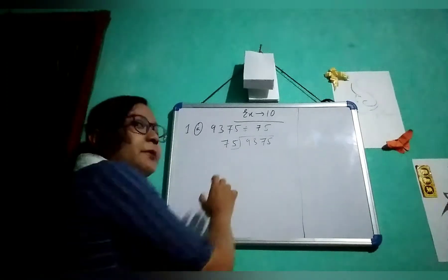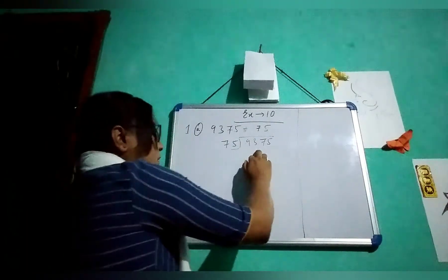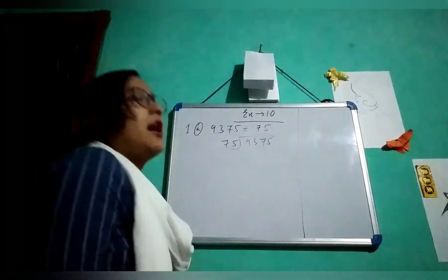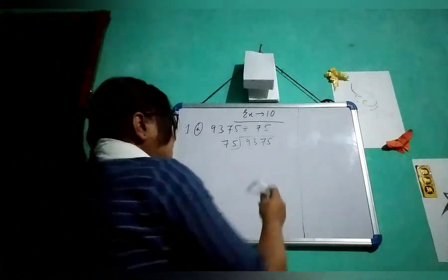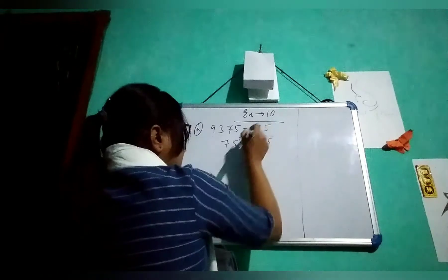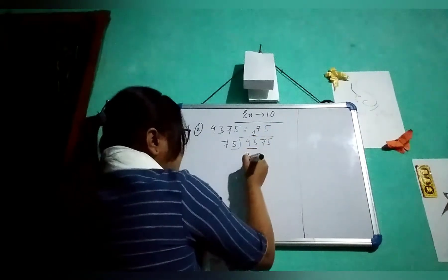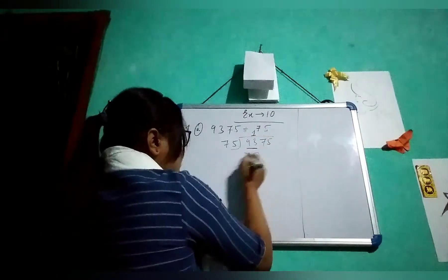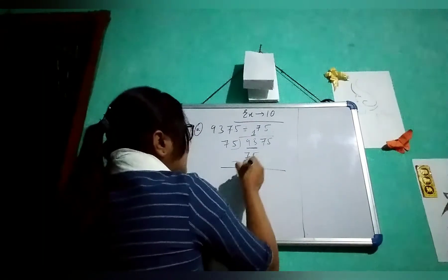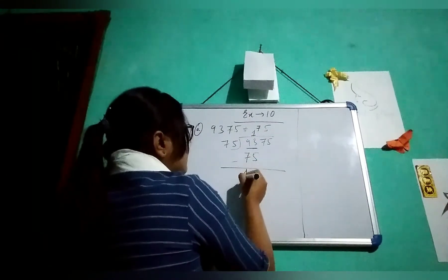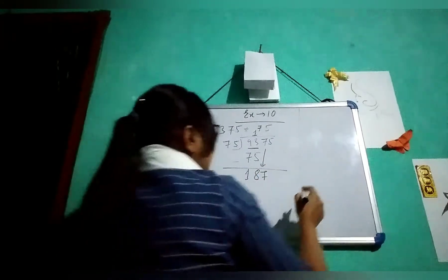75 will be the divisor and 9375 will be the dividend. If you divide, you take 2 numbers first. So it will be 1 — 75 times 1. If you do minus, you will get 8, and bring down 1. So doing 87.